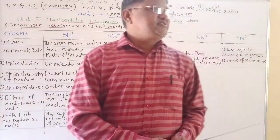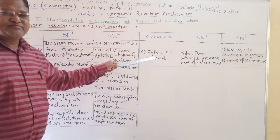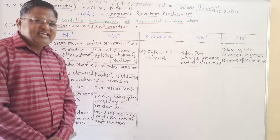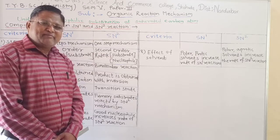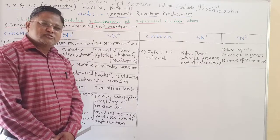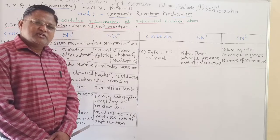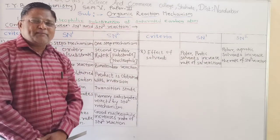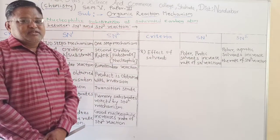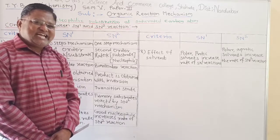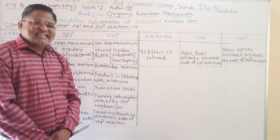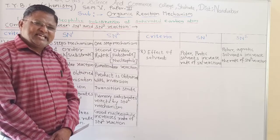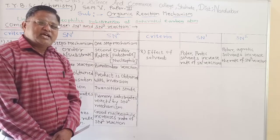The last criteria is the effect of solvent. Polar protic solvents increase the rate of SN1 reaction because in SN1 reaction, in the slow step, the carbonium ion is formed and is stabilized by polar protic solvents, and therefore the rate of SN1 reaction increases in polar protic solvents. In case of SN2 reaction, if the reaction is carried out in the presence of a polar protic solvent, then the nucleophile gets solvated and therefore the attack of the nucleophile is prevented. So the rate of SN2 reaction decreases in the presence of polar protic solvents.